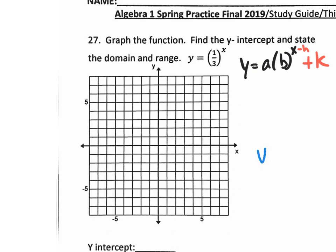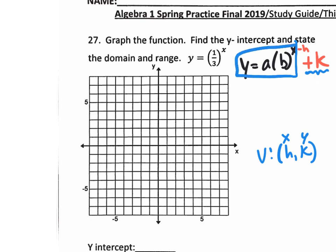You guys remember the vertex is h, k? Well, the h is the movement on your x, and the k is the movement on your y. Same thing here — the k is the movement on your y. Right here, we don't even have a k; it's just a parent graph. And normally, when we do have an h and a k, I say ignore the h and k, graph your parent graph, and then do a shift according to h and k.